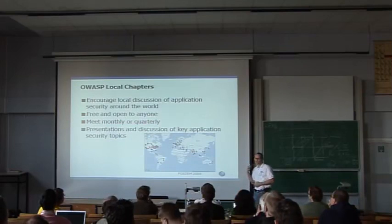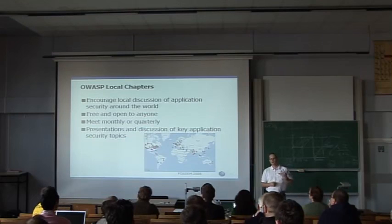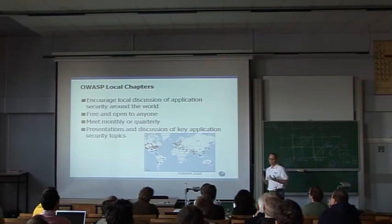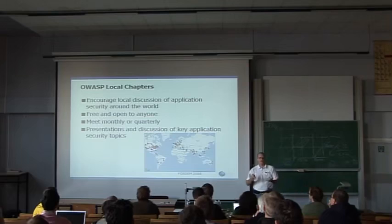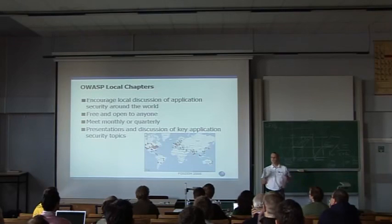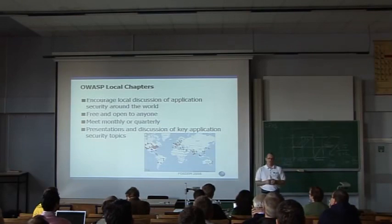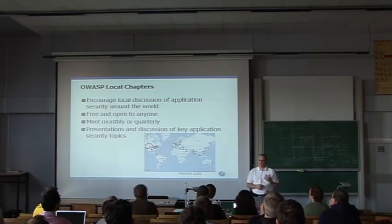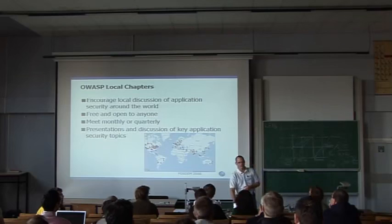Another important OWASP resource is the local chapters. The local chapters provide a forum for people interested in application security to get together and discuss what they're doing and how to do various things in the field. It's free and open to anybody to participate. Go to the OWASP site and see if there is a local chapter in your area. If there isn't, maybe you'd like to start one. Typically they meet on a monthly or quarterly basis, with presentations and discussions of key application security topics.